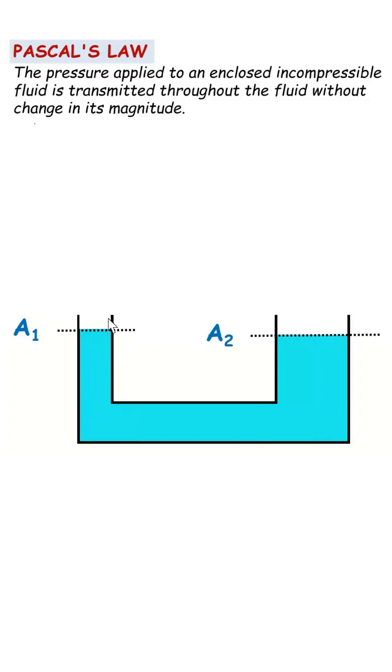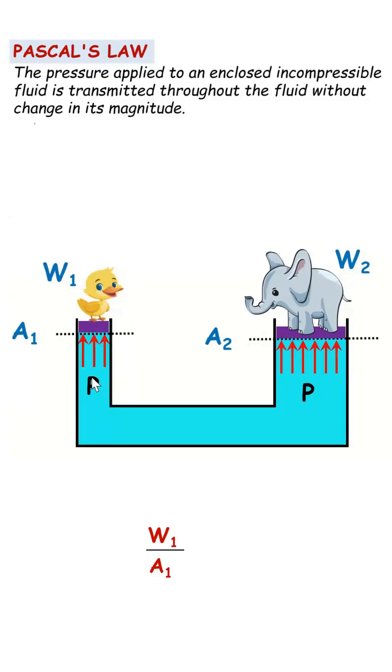We shall put certain piston over here which is having load W1 and at the same time I am putting another piston over here which is having load W2. Now according to Pascal's law friends the pressure over here is same as pressure over here.